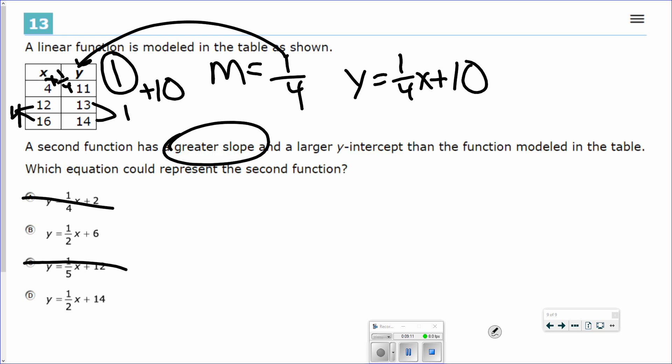And right now, I've got my two pieces. I've got my slope. I've got my y-intercept. So I'm looking for greater slope, which I've already taken out two of them. And now I'm looking for a larger y-intercept. So my y-intercept is 10. If I look at B, plus 6 is not bigger than 10. B's out. D has plus 14. That's my bigger one.